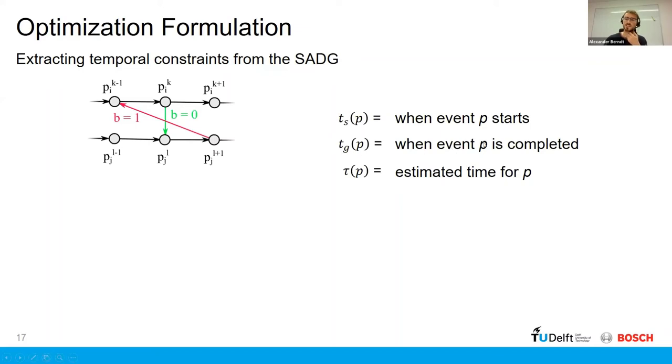We have TG, the time at which that event is completed, and then tau P, which is just the time estimated to complete that event. And then the black arrows can be represented by these constraints here, which is basically just the time that a vertex takes to be completed must be larger than the time at which it starts, plus the time it takes to complete that vertex. That's simple enough. And similarly, the next vertex, the K plus 1 vertex, can only start after the previous one was completed.